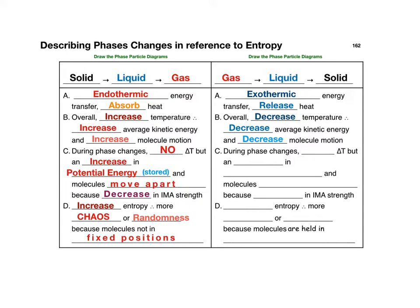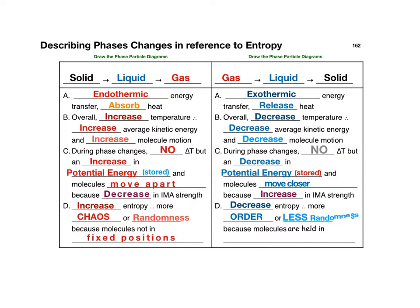If the kinetic nature decreases, then the molecules move less — a decrease in molecule motion. During any phase change, there is no delta T. But instead, we see a decrease in the potential energy, or the stored energy, of the system. As a result, the molecules with less stored energy are able to move closer together, and as they move closer together, they start to develop stronger intermolecular attraction — we see an increase in the IMA strength. As a result of less energy, lower temperature, molecules moving closer, and stronger IMAs, there is a decrease in the entropy of the system. The system ends up with more order or less randomness, because now the molecules are being held in fixed positions.